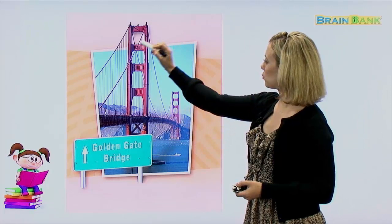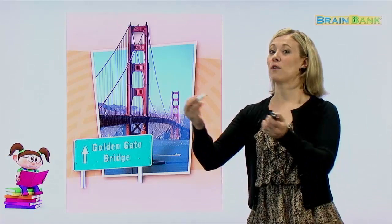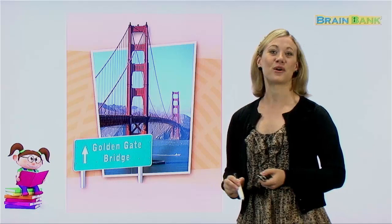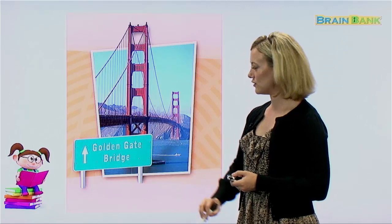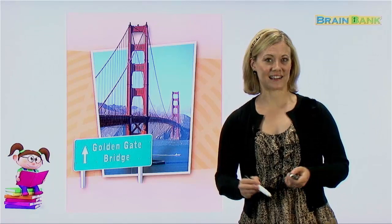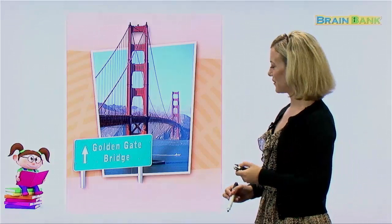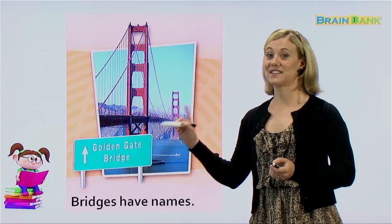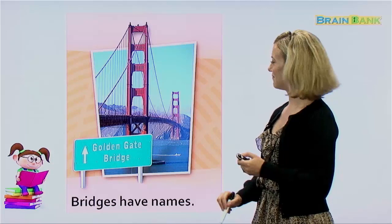Next, what is this? This is a bridge — a bridge. We use bridges to get from one piece of land to another; we usually use them to cross over water. And in this case, this is a very famous bridge, also in the United States, called the Golden Gate Bridge. Can you say that with me? The Golden Gate Bridge. This bridge is in California, in a very famous city called San Francisco. So bridges have names. Can we read it all together? Bridges have names. Very good. And this bridge is called the Golden Gate Bridge.